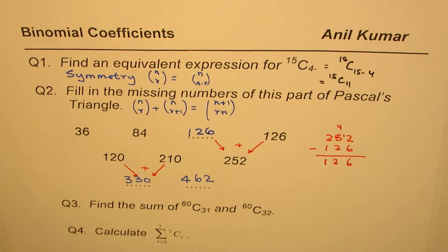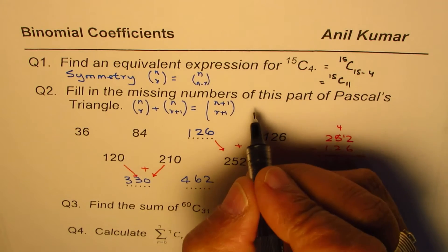The property number two has been used here, which is sum of two consecutive entries. So the property name here is sum of consecutive entries.